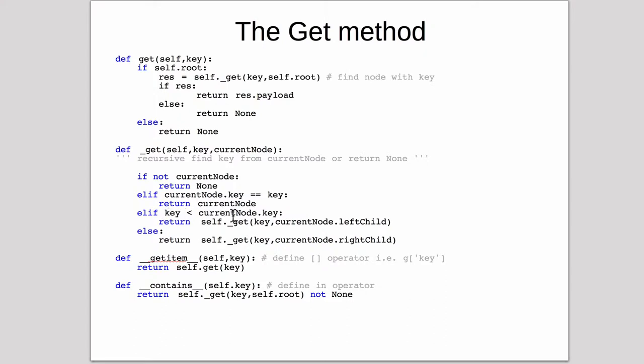Otherwise, it hasn't found it, so it has to look in the left or right child. Is the key less than the current key? If it is, then recurse into the left child. Else, recurse into the right child. So that's the recursive get.